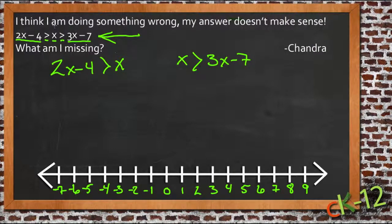We can graph what x actually is. X is what's in over here: 2x - 4 is greater than x, and x is greater than 3x - 7. So what we're looking for is all the values of x that satisfy both of these inequalities. So let's take a look at what happens when we work on solving these.